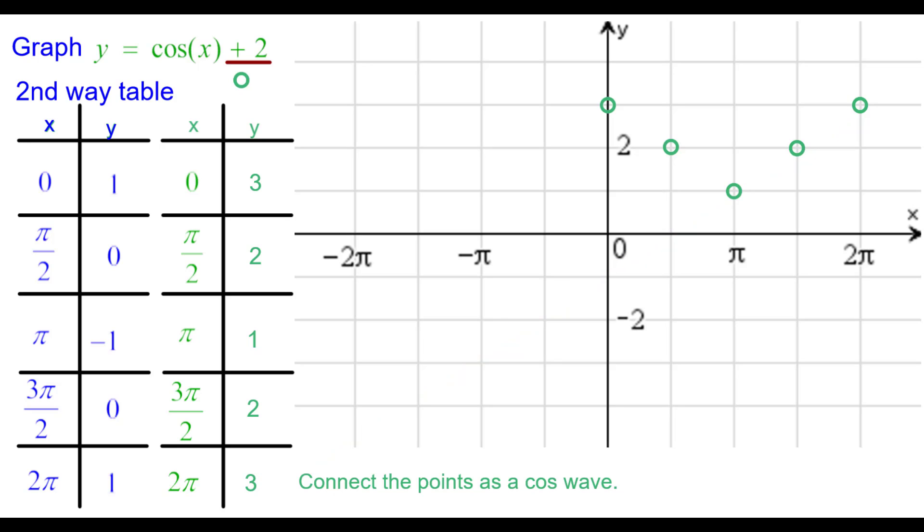Connect the points as a cosine wave. Half of a frown concave down, entire smile concave up, and half of a frown concave down.